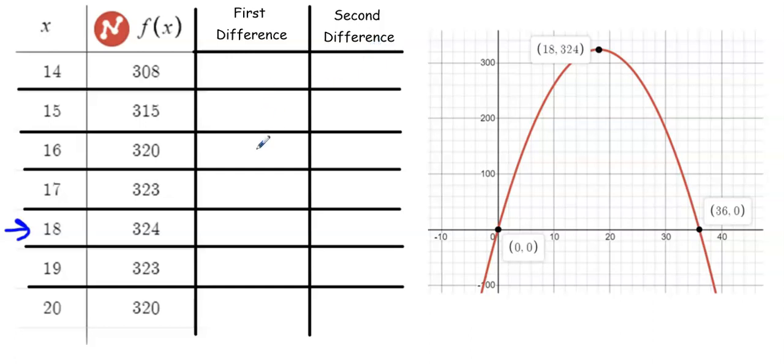But let's take a look at our first and second difference to not only get an idea about the rate of change of my parabola, but also confirm what we already know, and that this is a quadratic function.